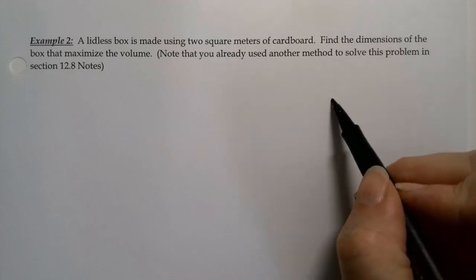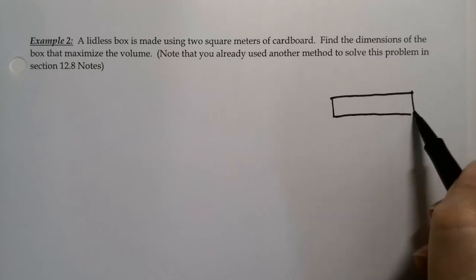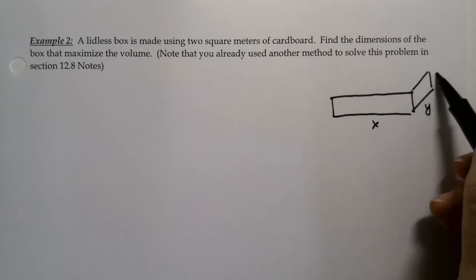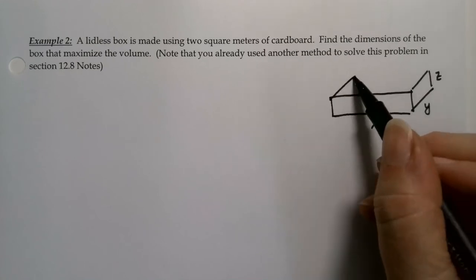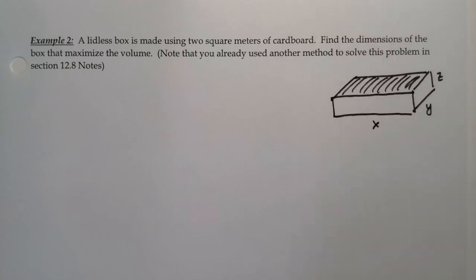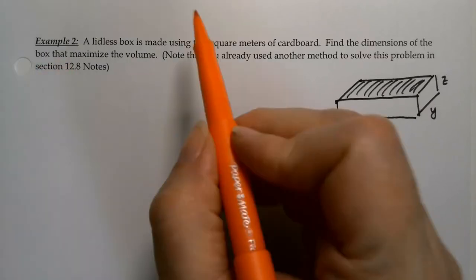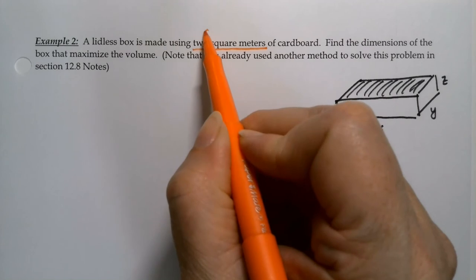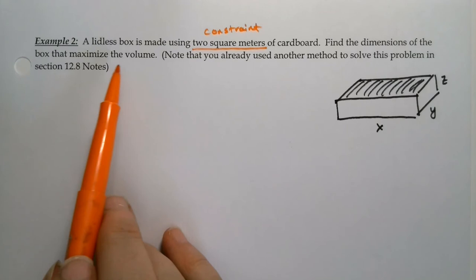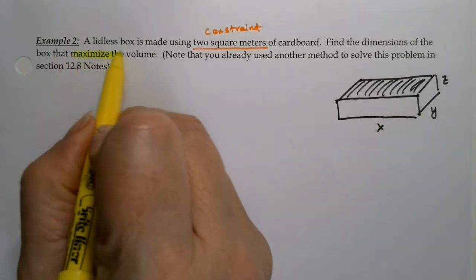In example two, we have a problem that I think is easier with the Lagrange process. Let's see if you agree with me. Now we have a lidless box, which of course is assumed to be in a rectangular shape, a rectangular prism, and it has no lid on the top. We want to maximize volume.